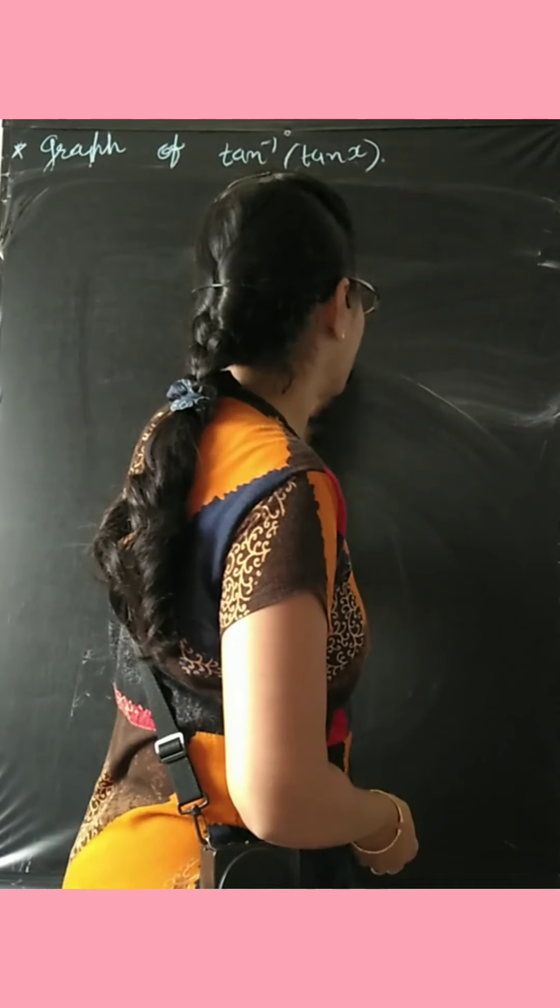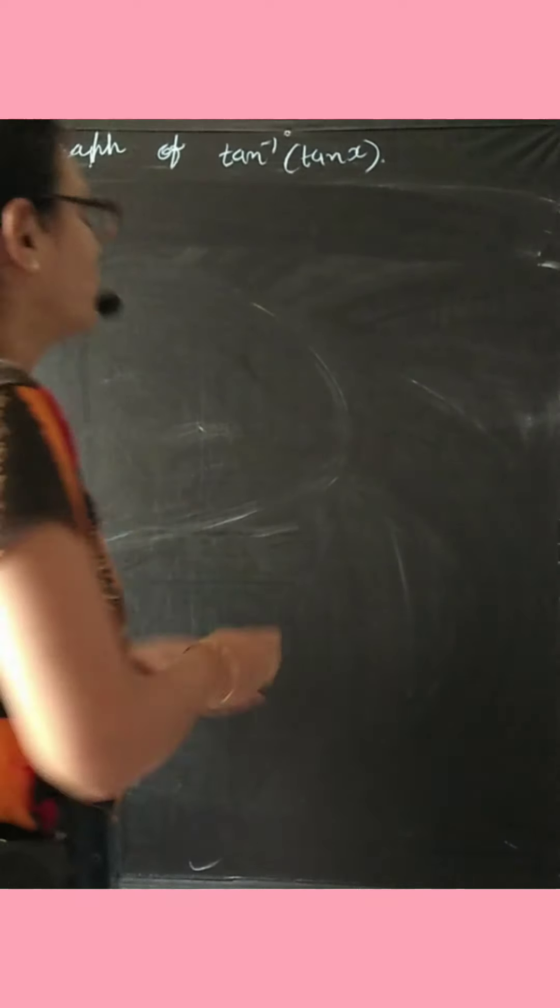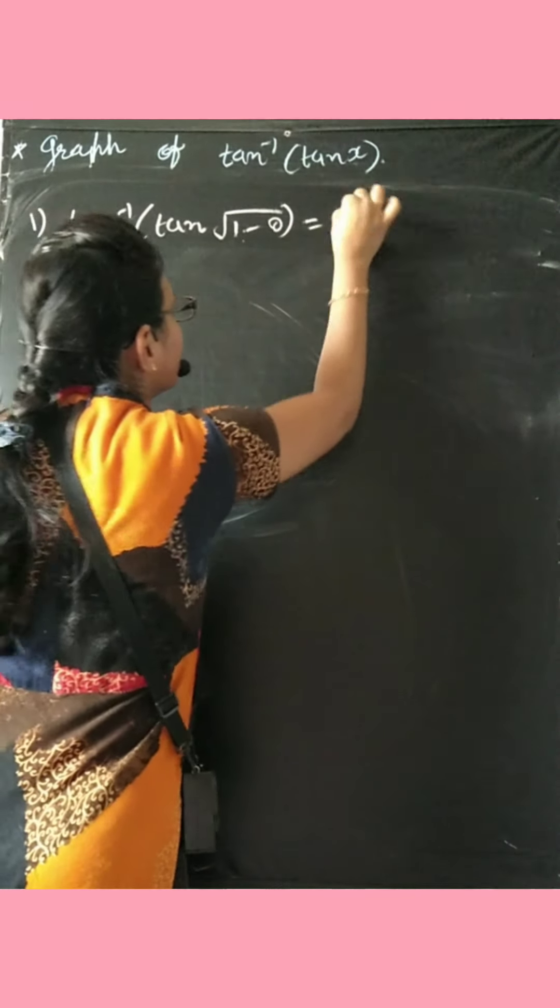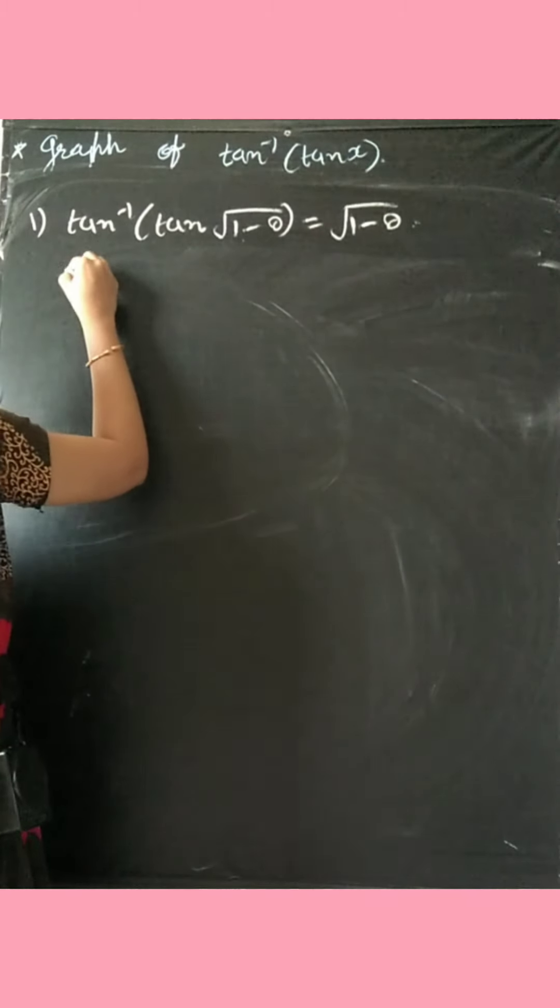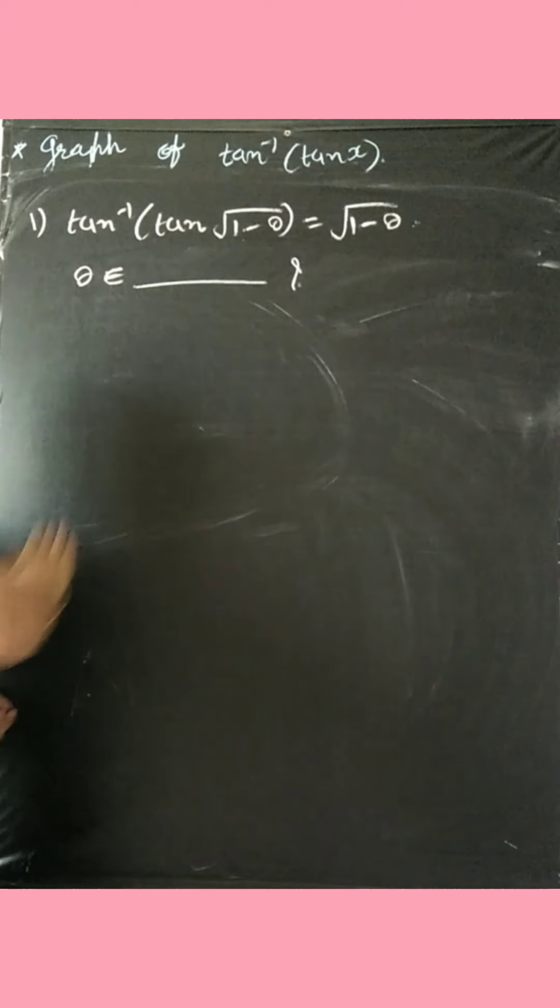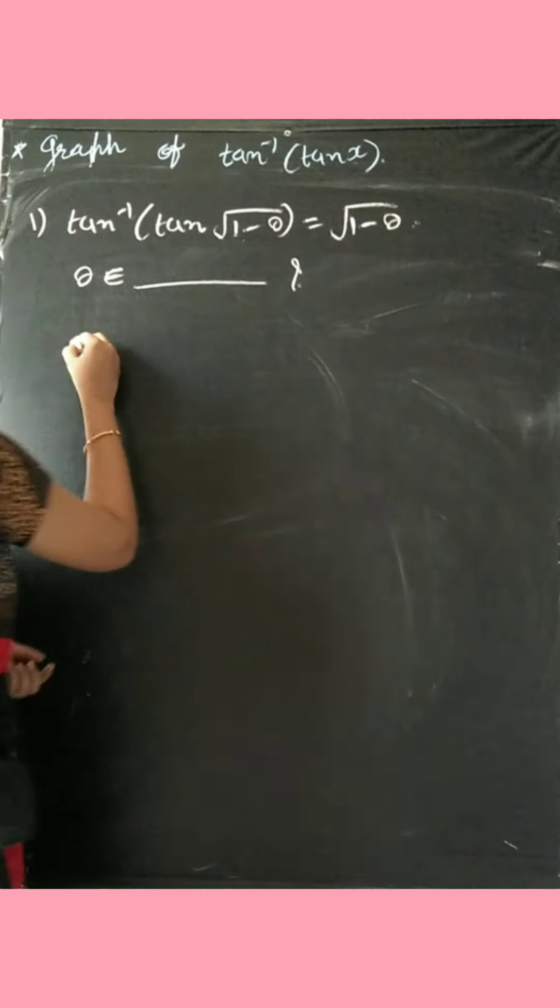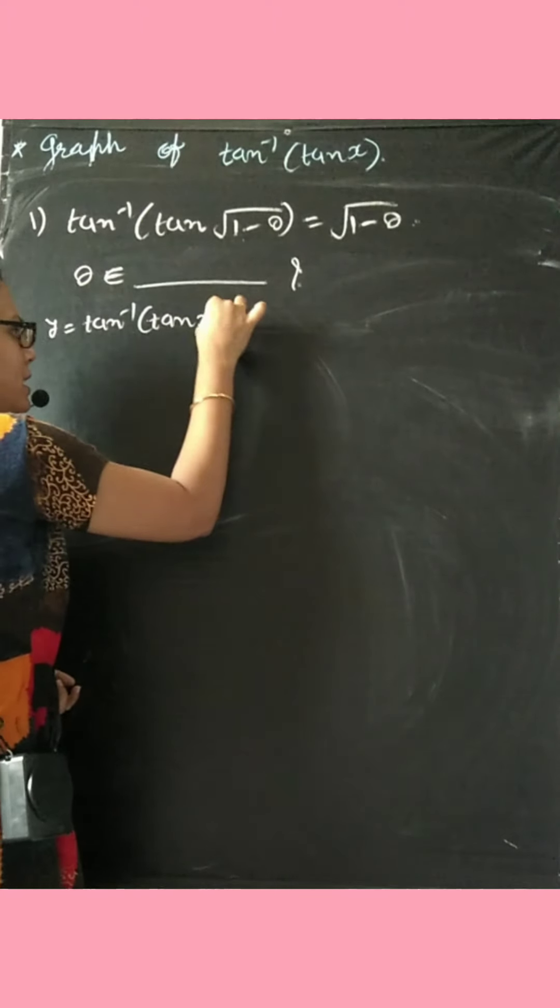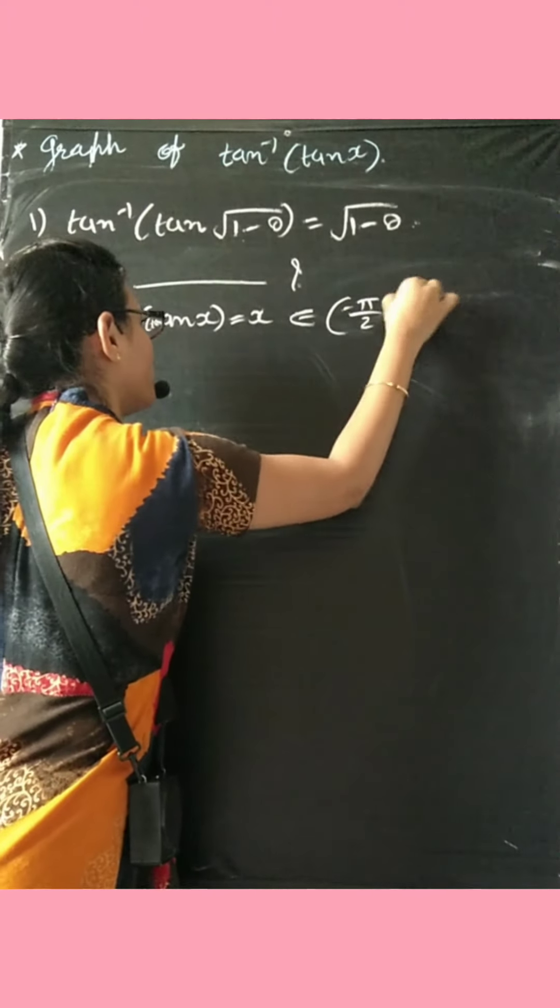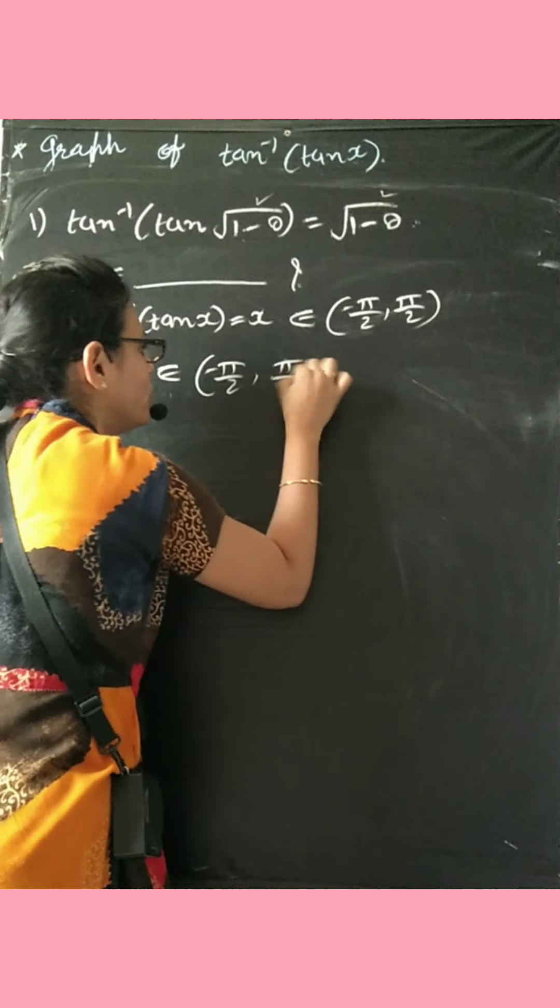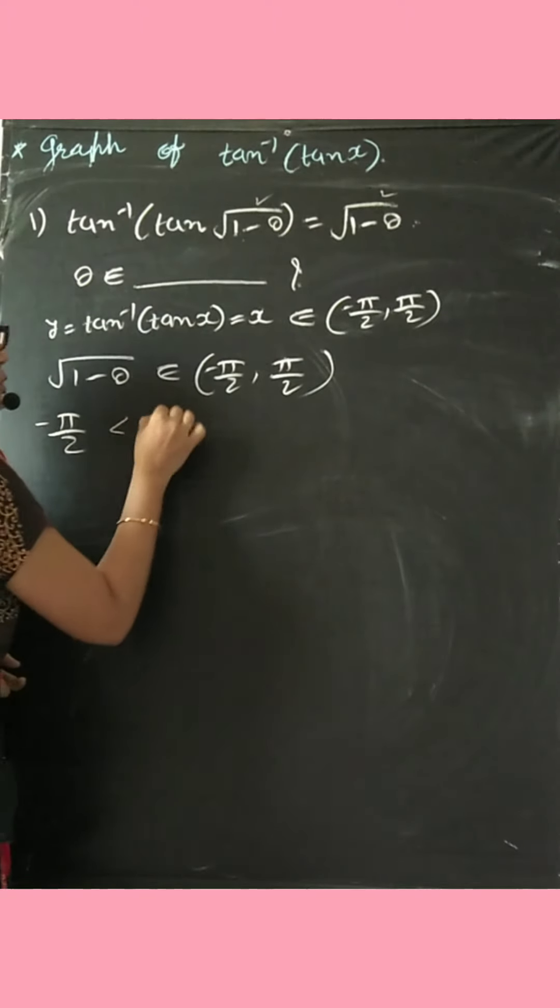But right now suppose if I talk about sums related to this, one sum we can do. If you have tan inverse of tan root one minus theta, given root one minus theta, then in which interval does theta lie? This is an MCQ-based question, but I'm not giving MCQ options. We have to solve this. How will we do it? Suppose one thing is certain: tan inverse of tan x is equal to x. When can this hold? Only when your x belongs to minus pi by 2 to plus pi by 2.